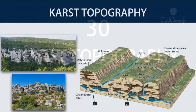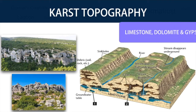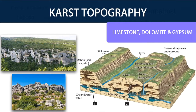Number 30: Karst Topography. Karst topography is a landscape formed from the dissolution of soluble rocks such as limestone, dolomite, and gypsum. It is characterized by underground drainage systems with sinkholes and caves. It has also been documented for more weathering-resistant rocks such as quartzite given the right conditions. In karst topography, the subterranean drainage may limit surface water with few to no rivers or lakes.